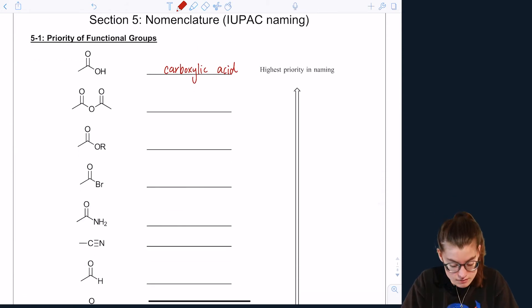The reason why I'm giving you these priorities is because the ranking and priority is going to help you decide who the parent is in a structure. Remember, when you're picking a parent chain, you want to pick the longest chain possible that has the highest priority functional group. And usually if you have multiple of the same functional group, you want to get as many of those high priority functional groups as possible.